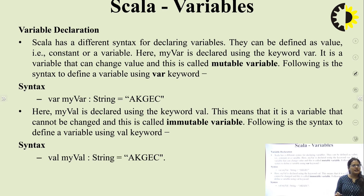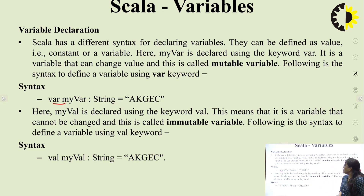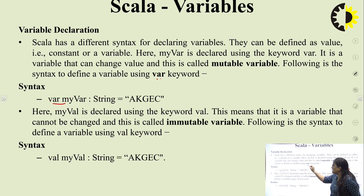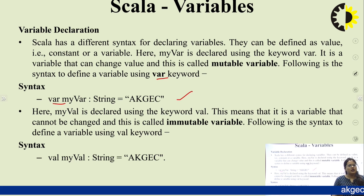Scala has a different syntax for declaring variables. They can be defined as a value (constant) or a variable. For mutable variables — those whose value can change — we use the 'var' keyword. For immutable variables — those that cannot be changed — we use the 'val' keyword.